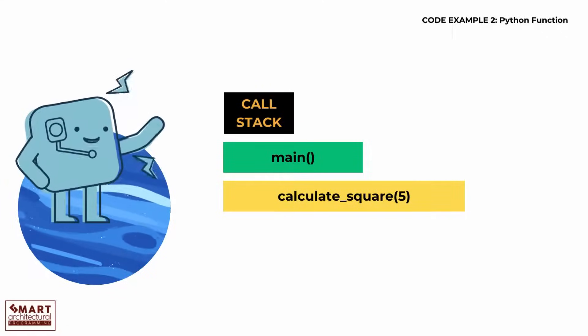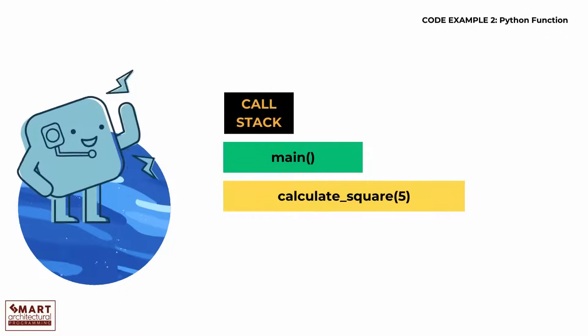Returning from function. After calculate_square completes, it's removed from the call stack, and its result is returned to main.